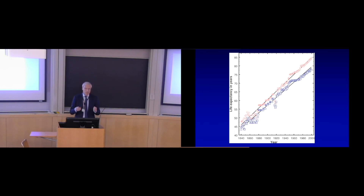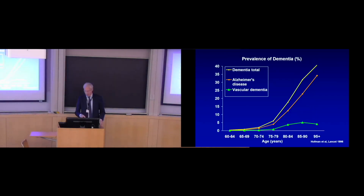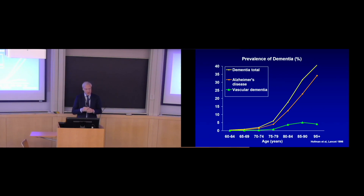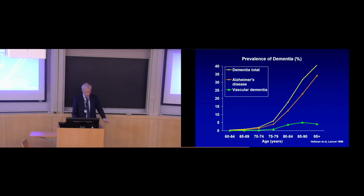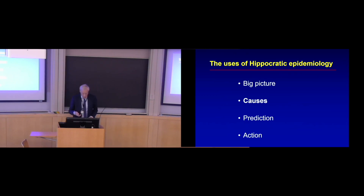These data provide a big picture. Here is another one: the prevalence of dementia. In this descriptive type of epidemiology, when you look from age 60 to 95, there is a strong increase in the prevalence of dementia and Alzheimer's disease up to nearly one in two if you make it to age 95. When you have such an observation, it inevitably leads to questions about causes, in the category of studying causes.